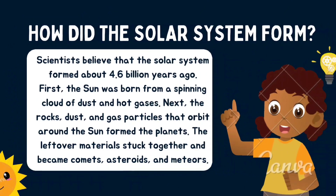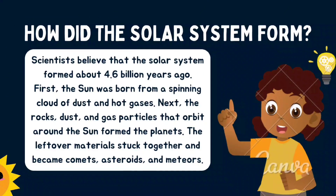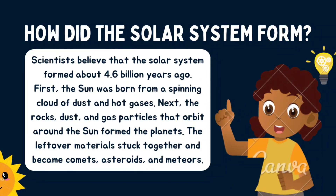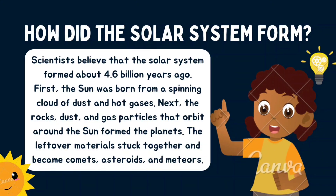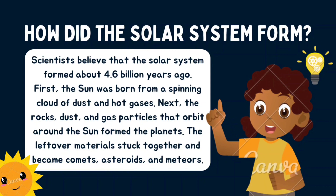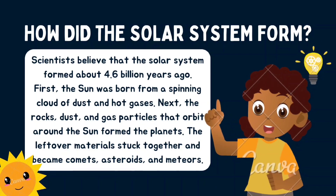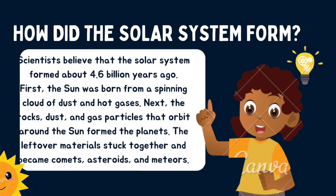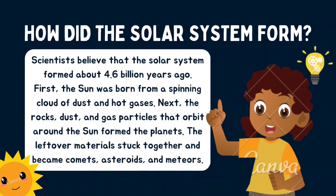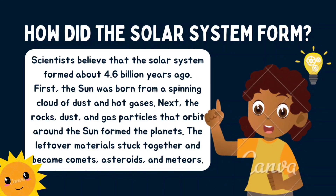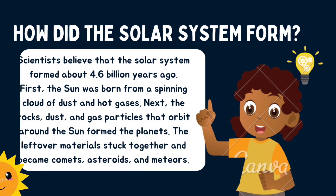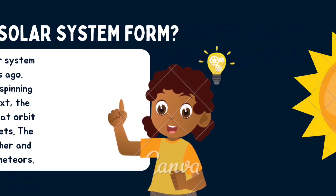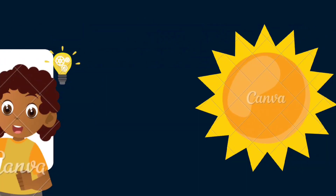Now let's read about how the solar system formed. Scientists believe that the solar system formed about 4.6 billion years ago. First, the sun was born from a spinning cloud of dust and hot gases. Next, the rocks, dust, and gas particles that orbit around the sun formed the planets. The leftover materials stuck together and became comets, asteroids, and meteors.